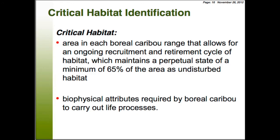For critical habitat, we now have a new way of identifying it. What we're looking at is the area within each boreal caribou range that allows an ongoing recruitment and retirement cycle of habitat — acknowledging that what is critical habitat and what is habitat for a caribou can change over time. However, we have to maintain a perpetual state of a minimum 65% of the area as undisturbed habitat. We're also acknowledging that not all habitat within the range meets the biophysical attribute definition important for caribou.